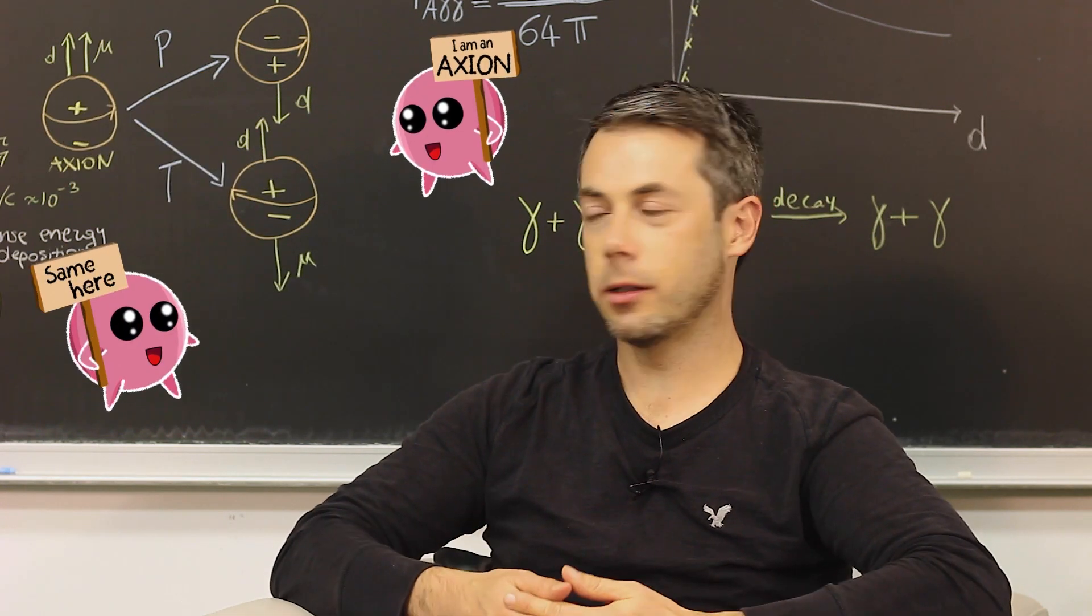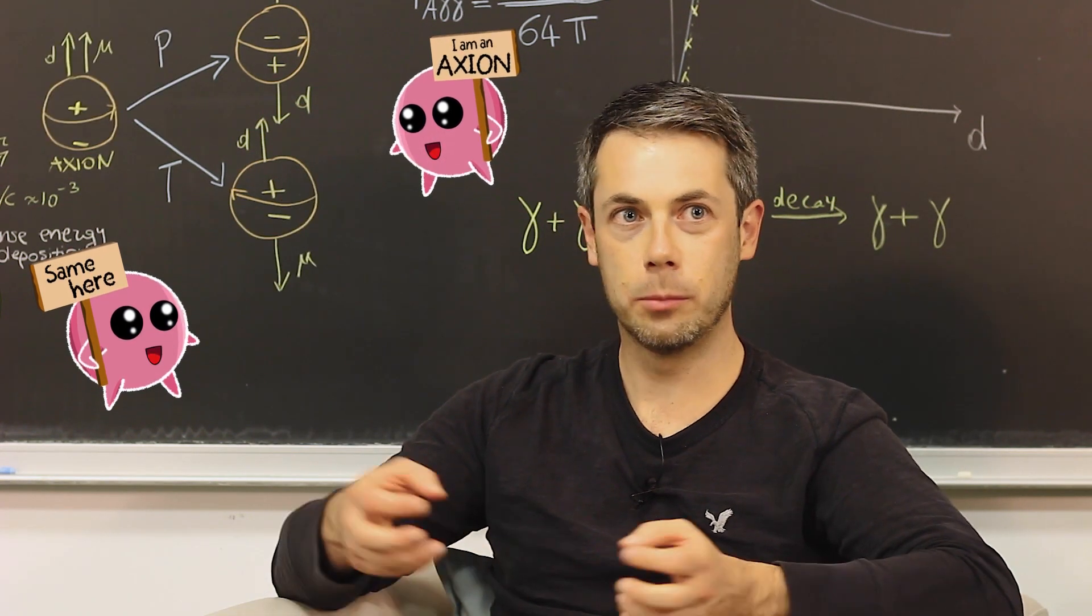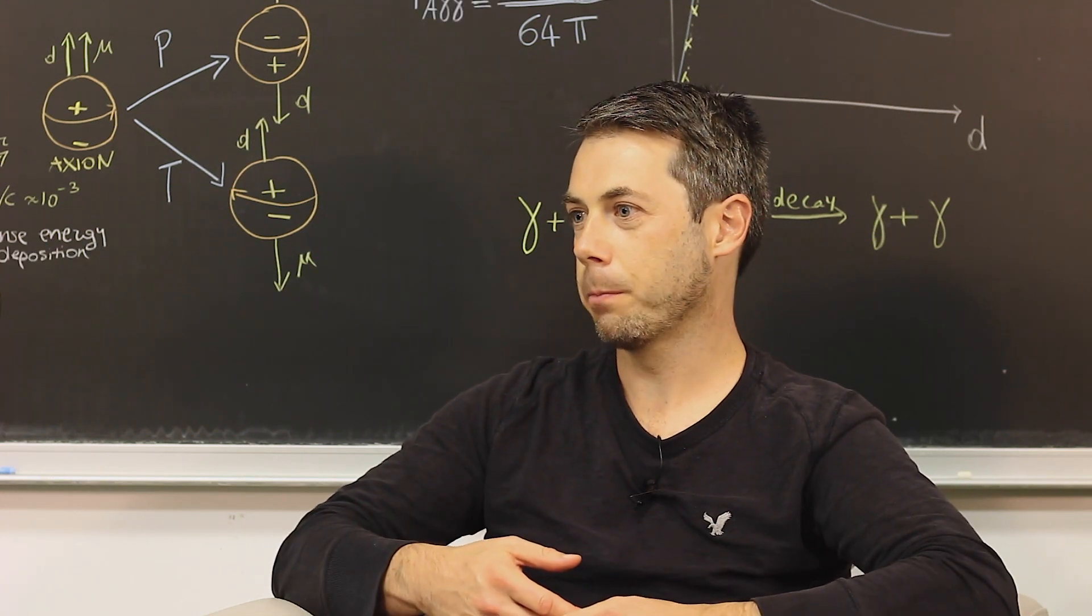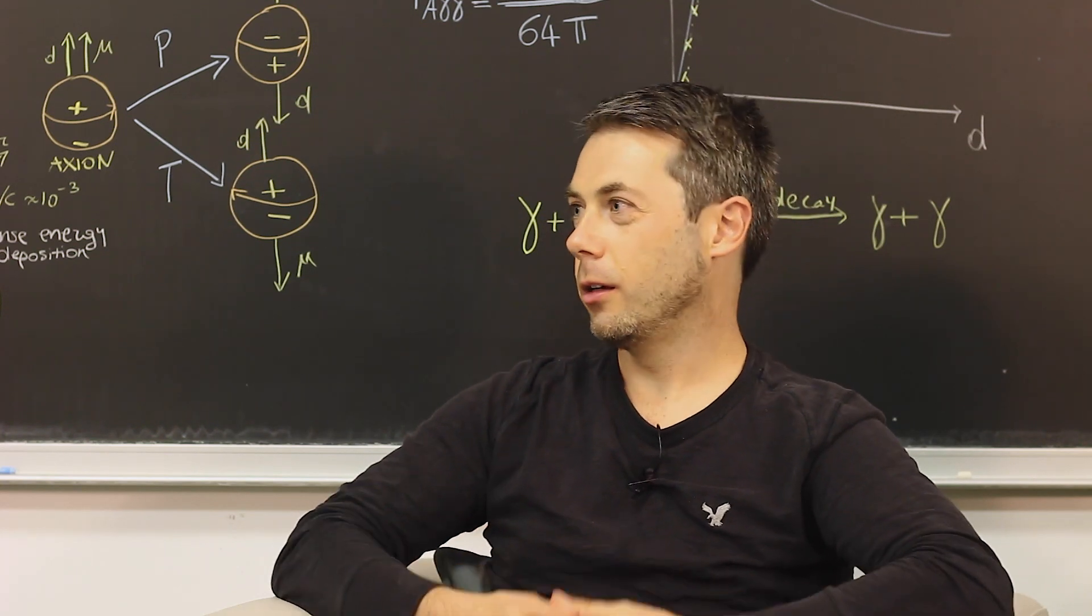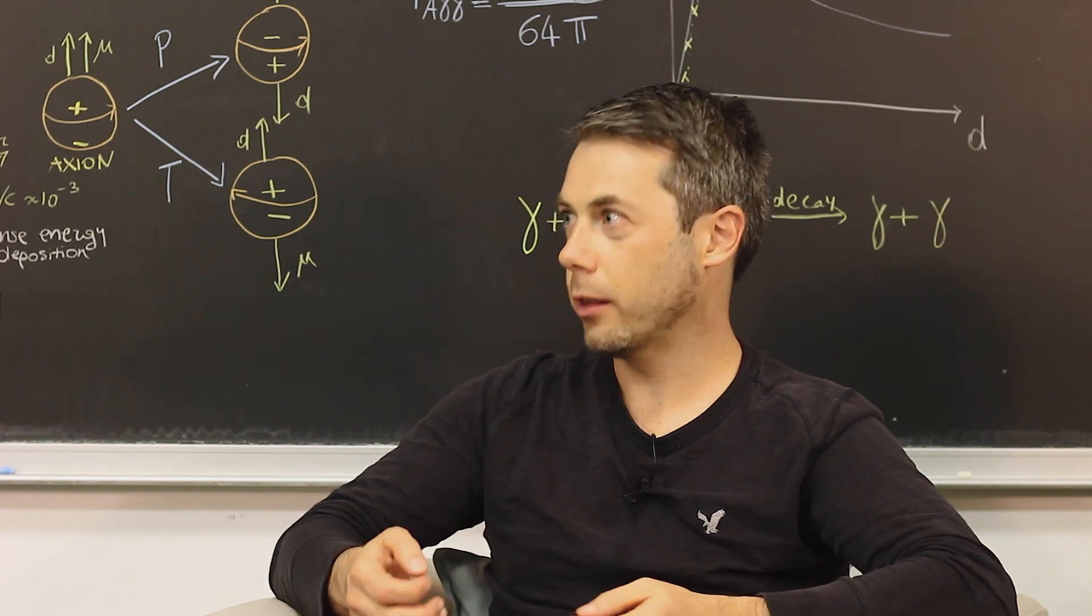On the other hand, axions are interacting via the strong force. This is the strong force that keeps the atomic nucleus together via exchanging gluons. And we have a lot of freedom in building all these different models. And that's why the dark matter candidates have different properties and their strengths and weaknesses.